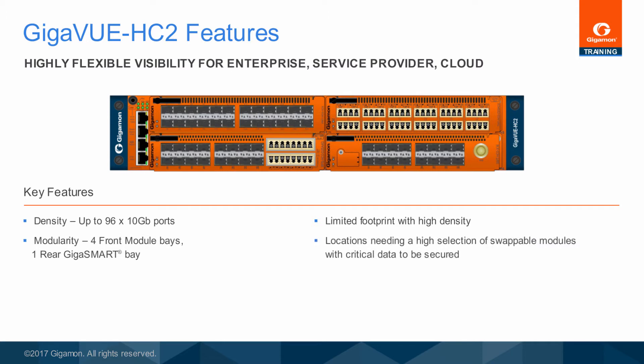Modularity: There are four module bays on the front of the Gigaview HC2, as well as an additional bay on the rear, which may be used for the rear Gigasmart module. The Gigaview HC2 supports a selection of port modules and Gigasmart, as well as a series of internal tap modules and inline bypass capabilities. Since the Gigaview HC2 is a modular system, any future modules which become available can be used in any existing Gigaview HC2 deployment.